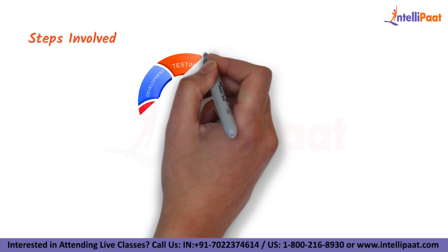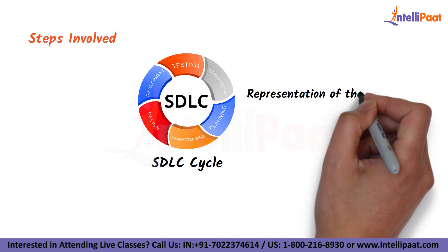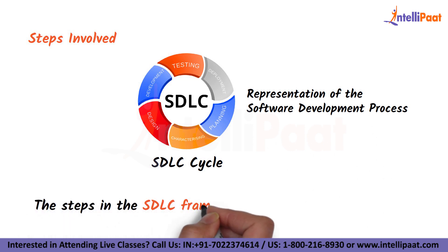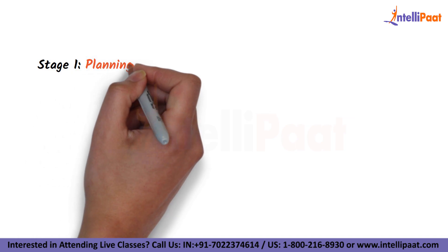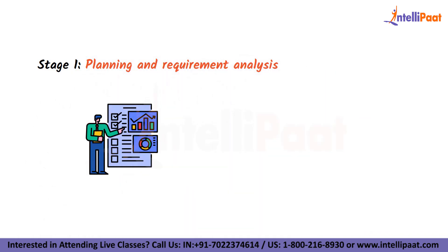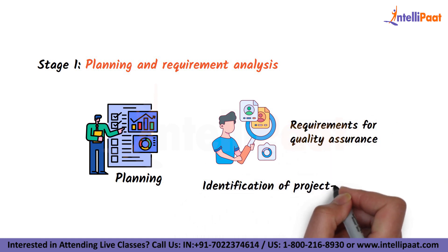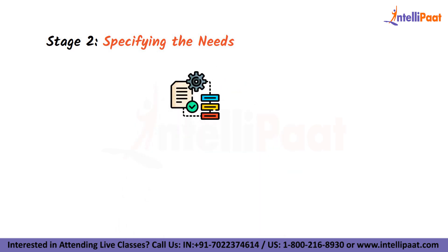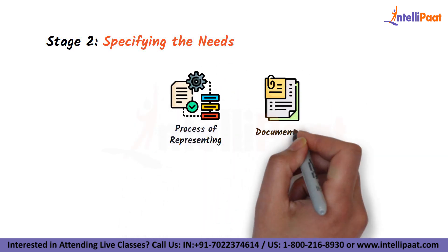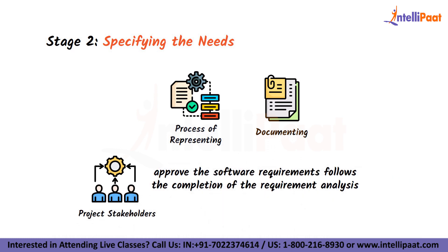Now, what are the steps involved in this SDLC cycle? This SDLC cycle is a representation of the software development. Firstly, we have planning and requirement analysis. At this point, planning is also done for the requirements for quality assurance and for the identification of project-related risks. Then comes the second stage, which is specifying the needs. The process of representing, documenting and getting the project stakeholders to approve the software requirements follows the completion of the requirement analysis.